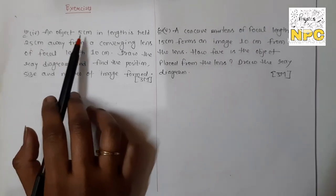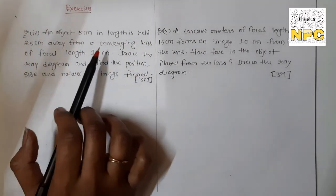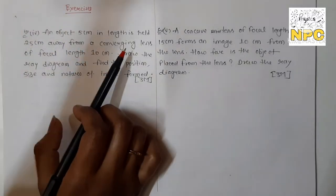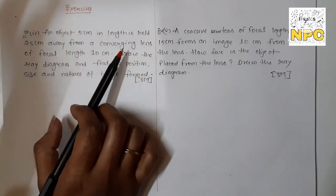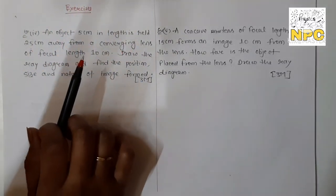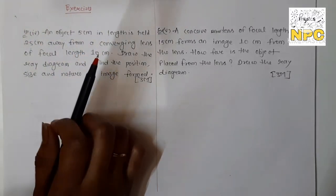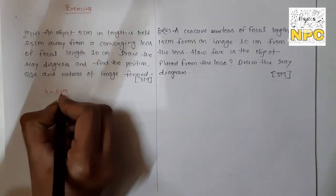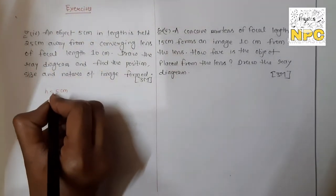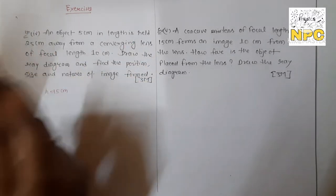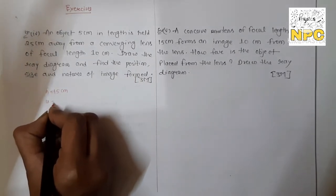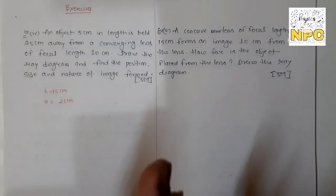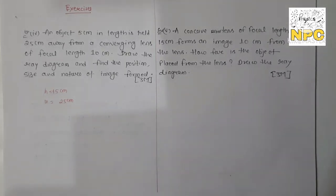Question number four: an object 5 cm in length is held 25 cm away from a converging lens — that is a convex lens, since a convex lens converges rays at a point. The focal length is 10 cm. So the given data: object height H = +5 cm, object distance U = -25 cm (negative because the object is in front of the lens on the left side), and focal length F = +10 cm (positive for convex lens).